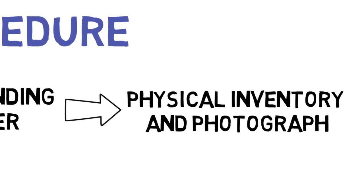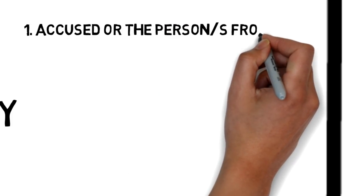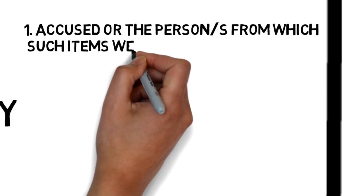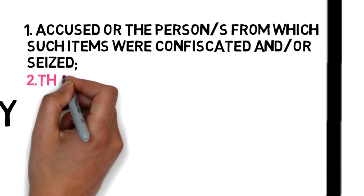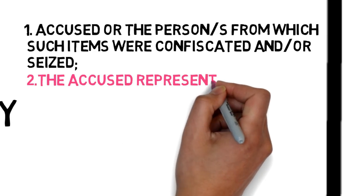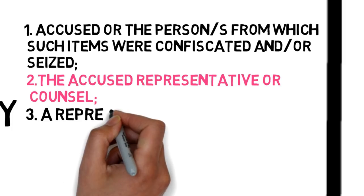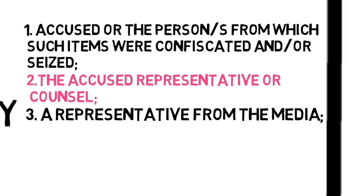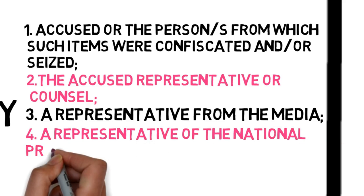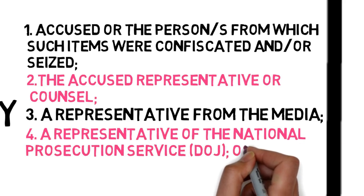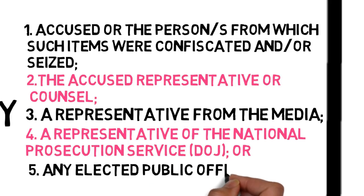This must be done in the presence of: one, the accused or the persons from which such items were confiscated; two, the accused's representative or counsel; three, a representative from the media; four, a representative of the National Prosecution Service; or five, any elected public official.